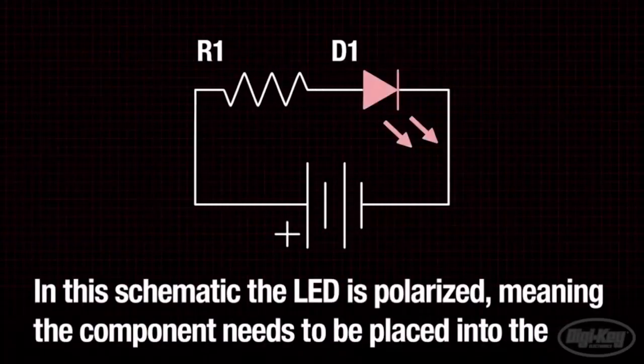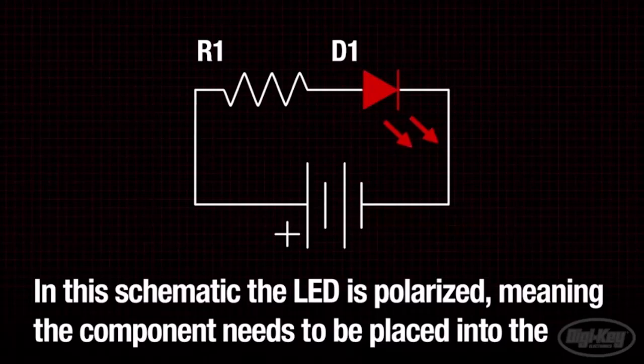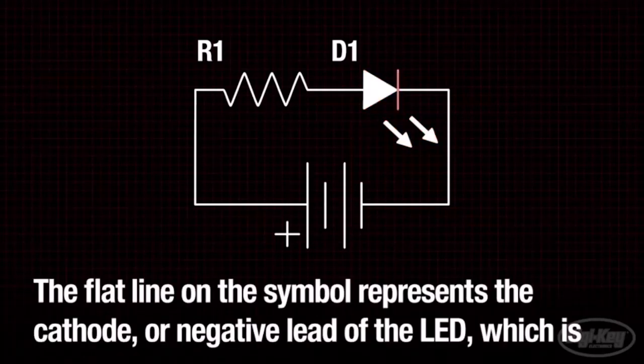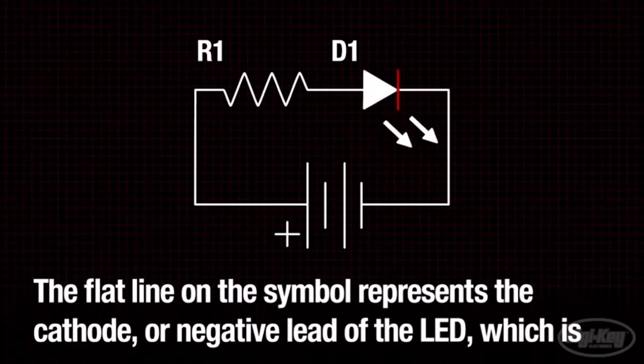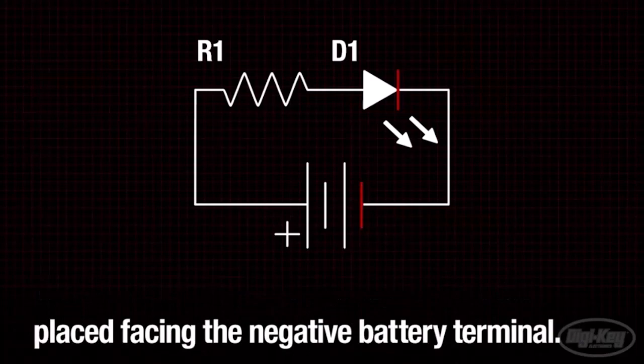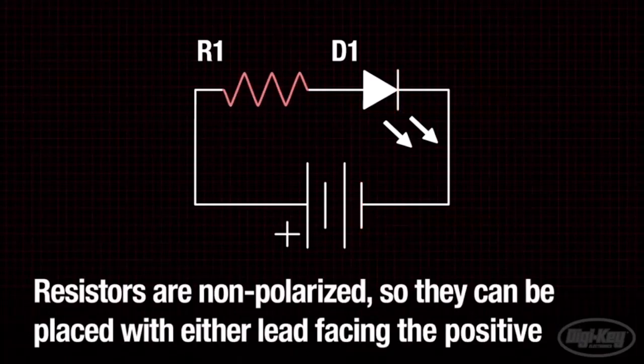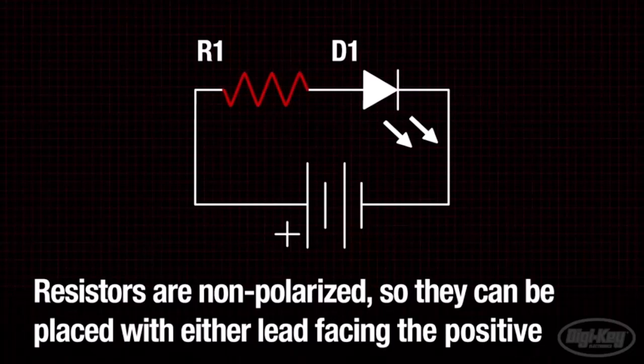In this schematic the LED is polarized, meaning the component needs to be placed into the circuit in a particular direction. The flat line on the symbol represents the cathode or negative lead of the LED, which is placed facing the negative battery terminal. Resistors are non-polarized so they can be placed with either lead facing the positive or negative